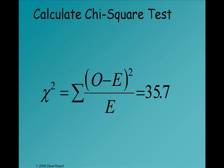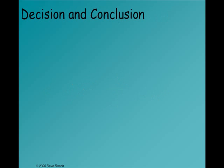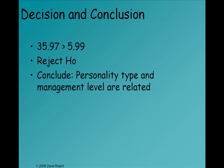So I got the 35.7, which is greater than 5.99, I reject H0, conclude there is a relationship between the two qualitative variables. And that's it for the chi-square.